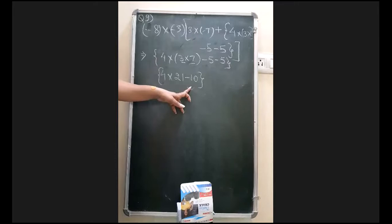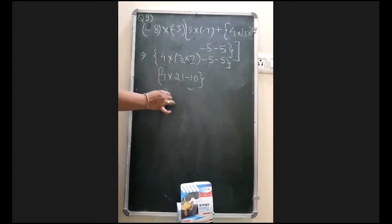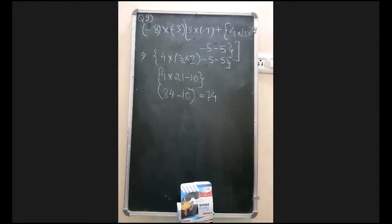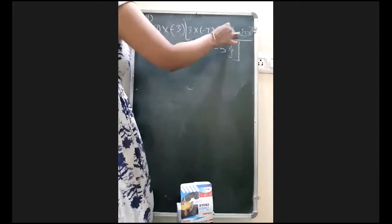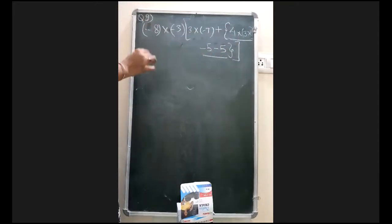Now, if you solve this one, 21 times 4 gives you 84 and this is minus 10, and 84 minus 10 when you will solve, you will get 74. I hope this step is clear to everyone.